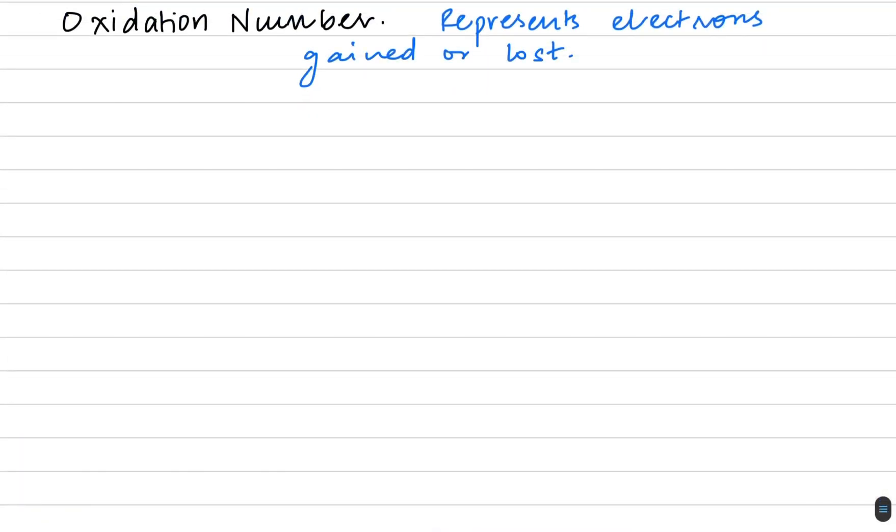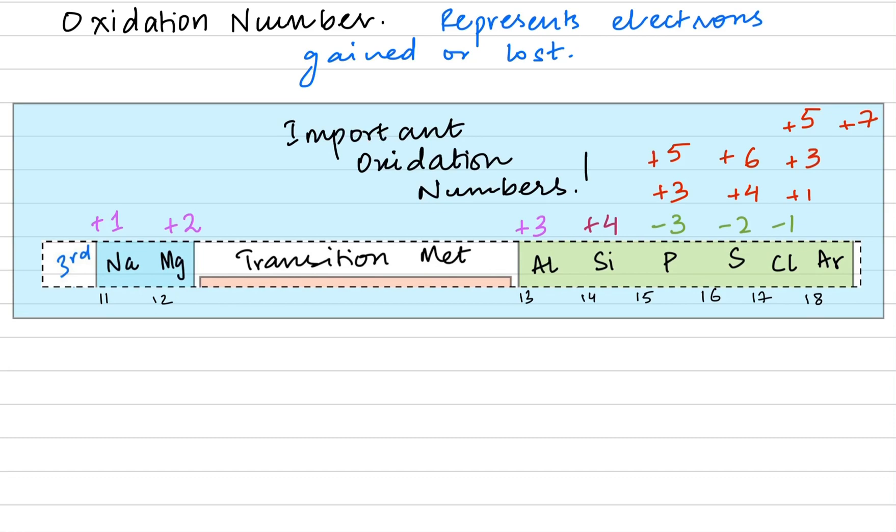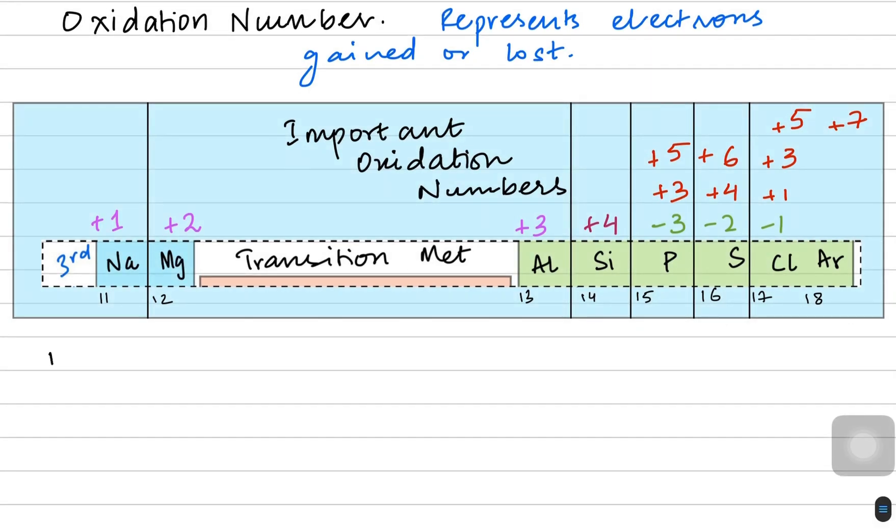Coming back, using these oxidation numbers, we will try to figure out the chemical formula. So we are going to use these oxidation numbers for the chemical formula.